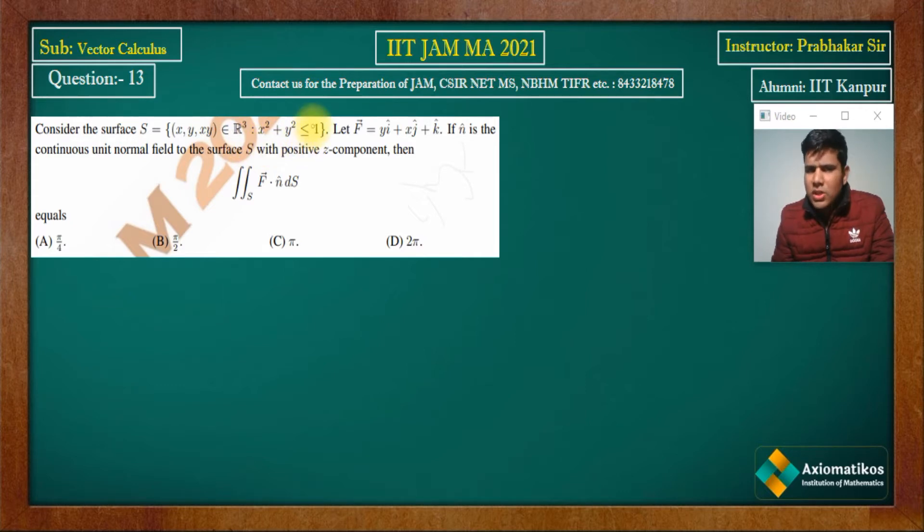The surface is defined as (x, y, xy) where x² + y² ≤ 1. So this is the condition that x and y must satisfy, and z equals xy, you have a surface. Now you have a force field, the F vector is y i cap plus x j cap plus k cap.